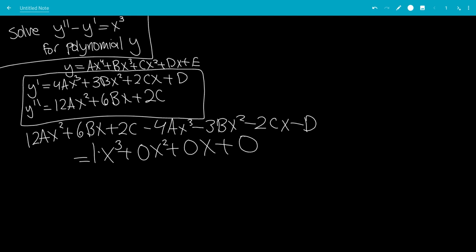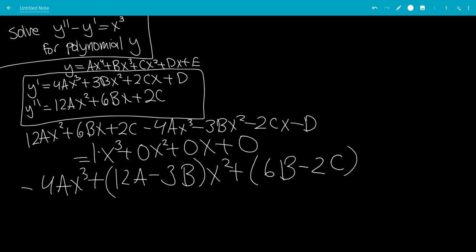Okay, so now let's group the x cubed terms together. So that's just negative 4ax cubed. Now let's group the x squared terms together. That would just be 12a and then minus 3b times x squared.